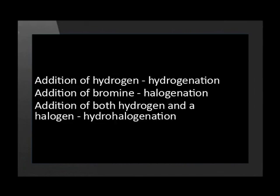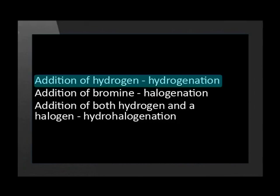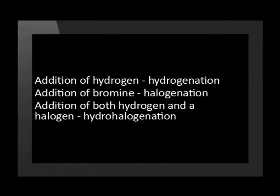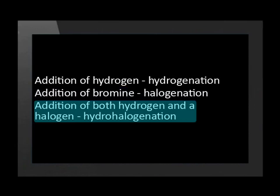We've seen that addition can occur with hydrogen in hydrogenation, while bromine or another halogen is added during halogenation. What if we add a molecule that contains both a halogen and hydrogen? We call this hydrohalogenation.